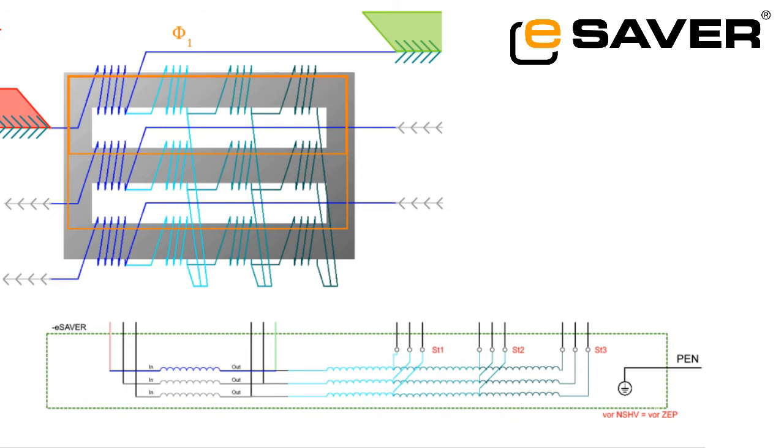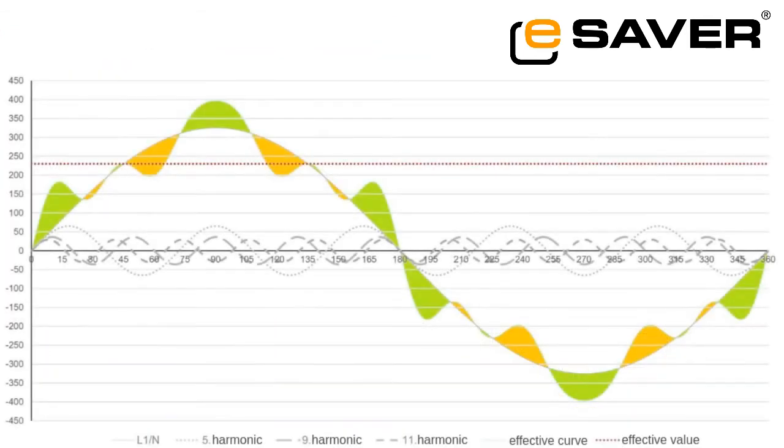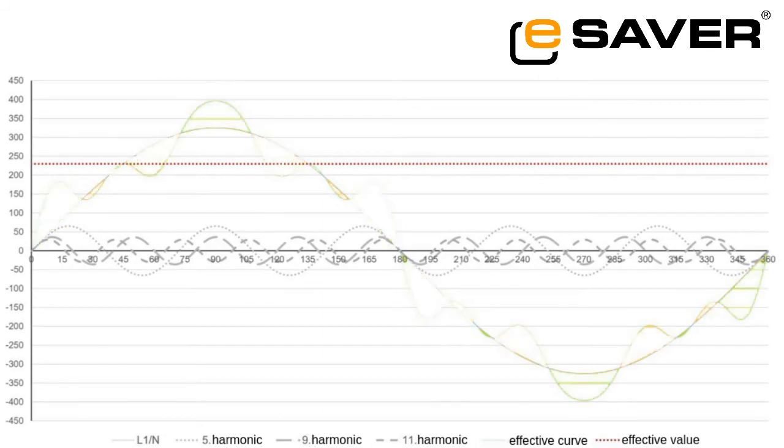At other times, when the additional energy from the harmonics is needed, the magnetic field is reduced again. That is how the eSaver balances out the deviations. When the voltage is too high, the magnetic field is built up. And when it is too low, the magnetic field fills up the gap. This results in a straightened wave at the output of the eSaver, which fits better to the ideal fundamental oscillation.